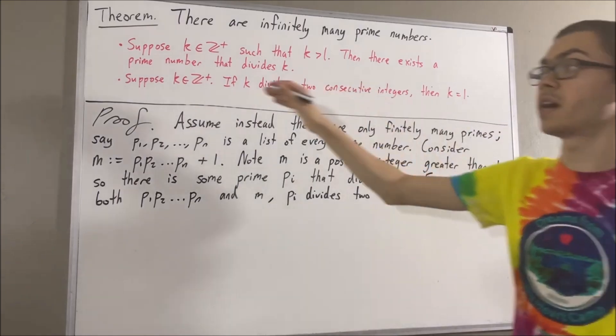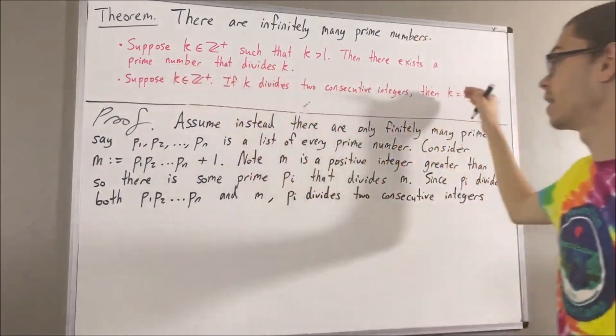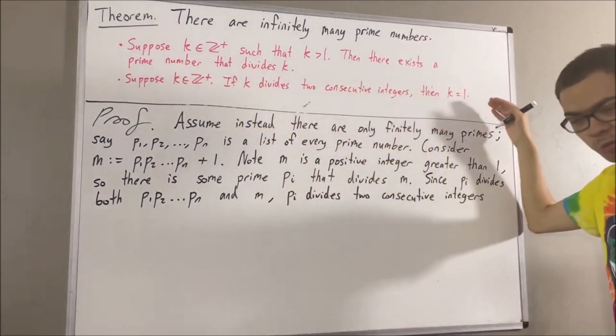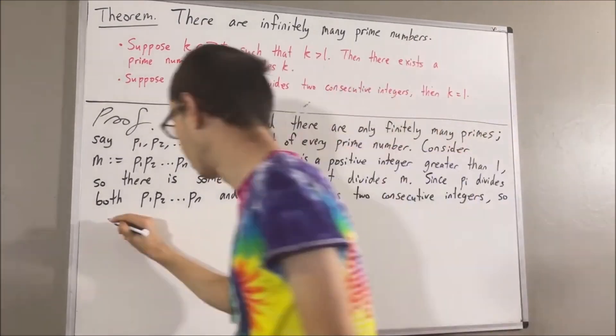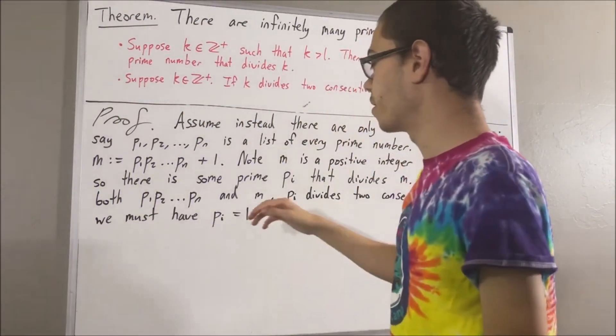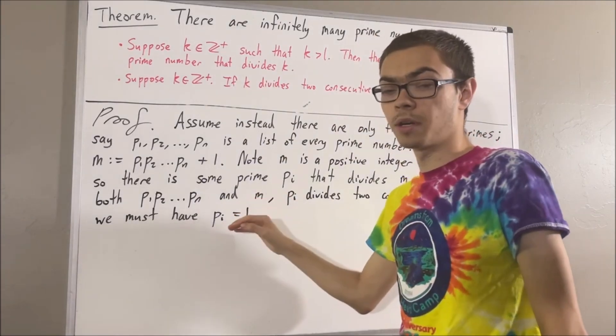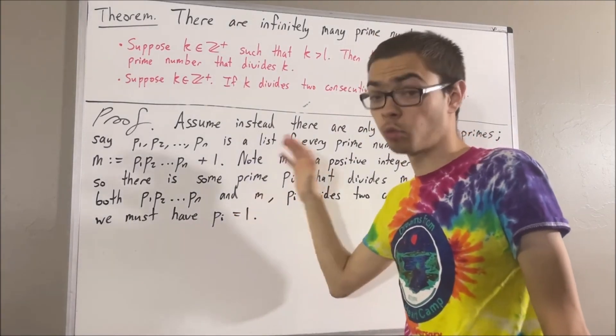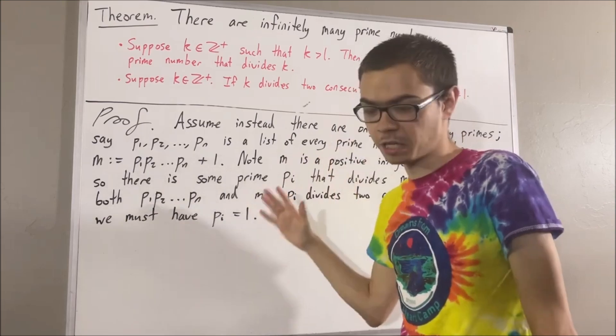And since pi is a positive integer, our second fact tells us that pi must be equal to 1. But pi is a prime number, and every prime number is greater than 1. So we have a contradiction.